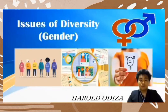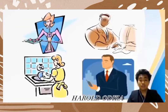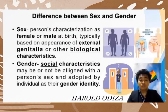Today, we are Group 4 and we will present to you the issues of diversity, particularly in gender. The difference between sex and gender: sex is a person's characterization as female or male at birth, typically based on the appearance of external genitalia or other biological characteristics. Sex refers to the different biological and physiological characteristics of males and females.